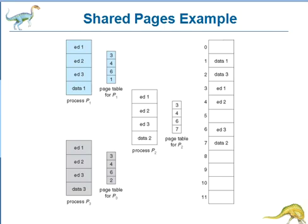The three pages are being shared among three processes. Each process has its own data page table. Only one copy of the editor needs to be kept in physical memory. Each user's page table maps onto the same physical copy of the editor. But data pages are mapped onto different frames.